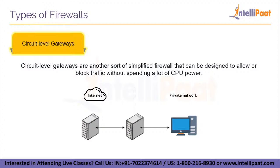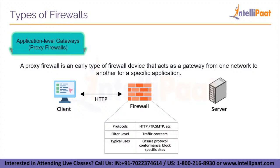Next up we have circuit level gateways. This firewall is another sort of simplified firewall that can be designed to allow or block traffic without spending a lot of CPU power. These firewalls typically validate TCP (Transmission Control Protocol) connections and sessions at the session level of the OSI model. Circuit level gateways are intended to keep established sessions safe.